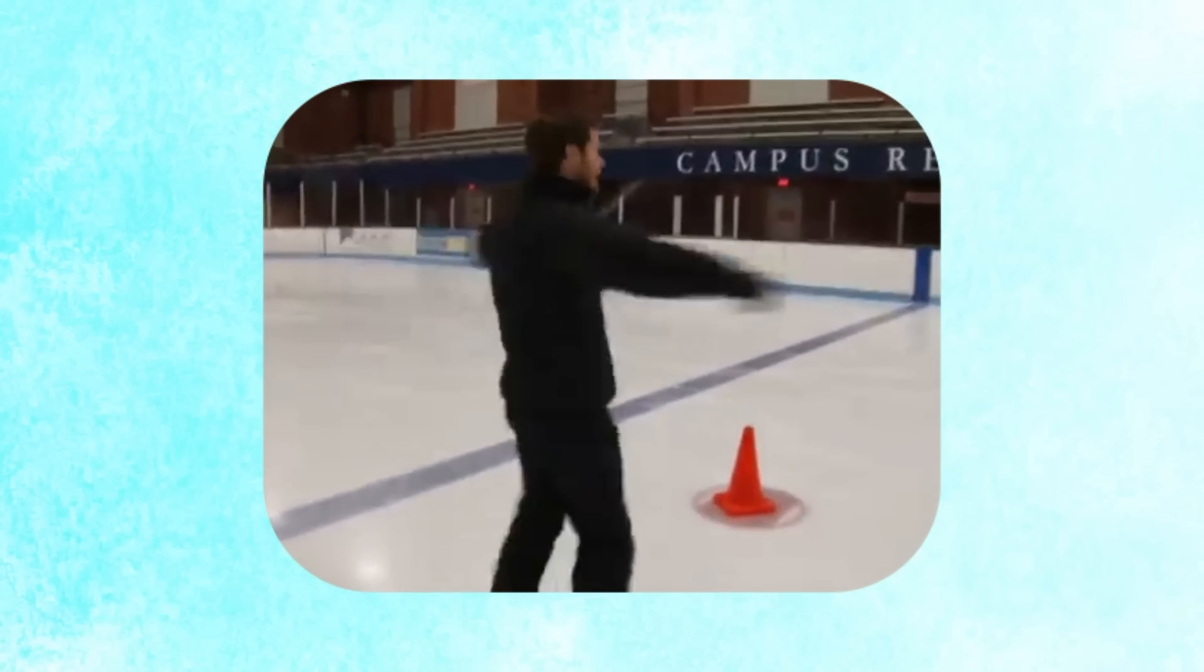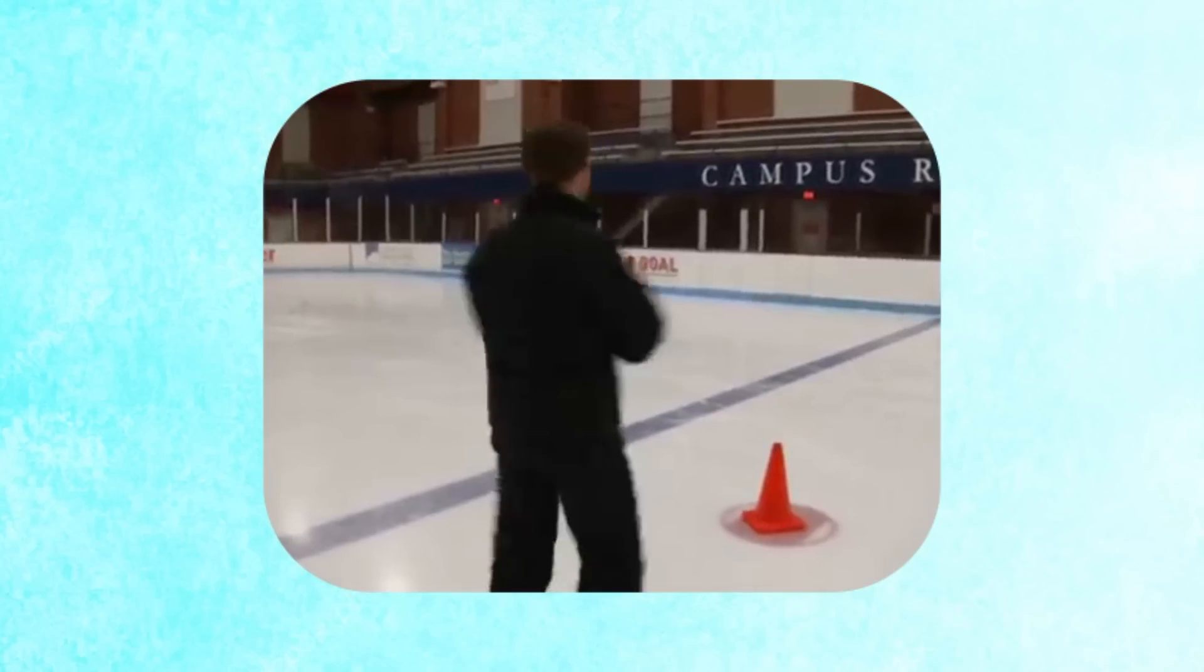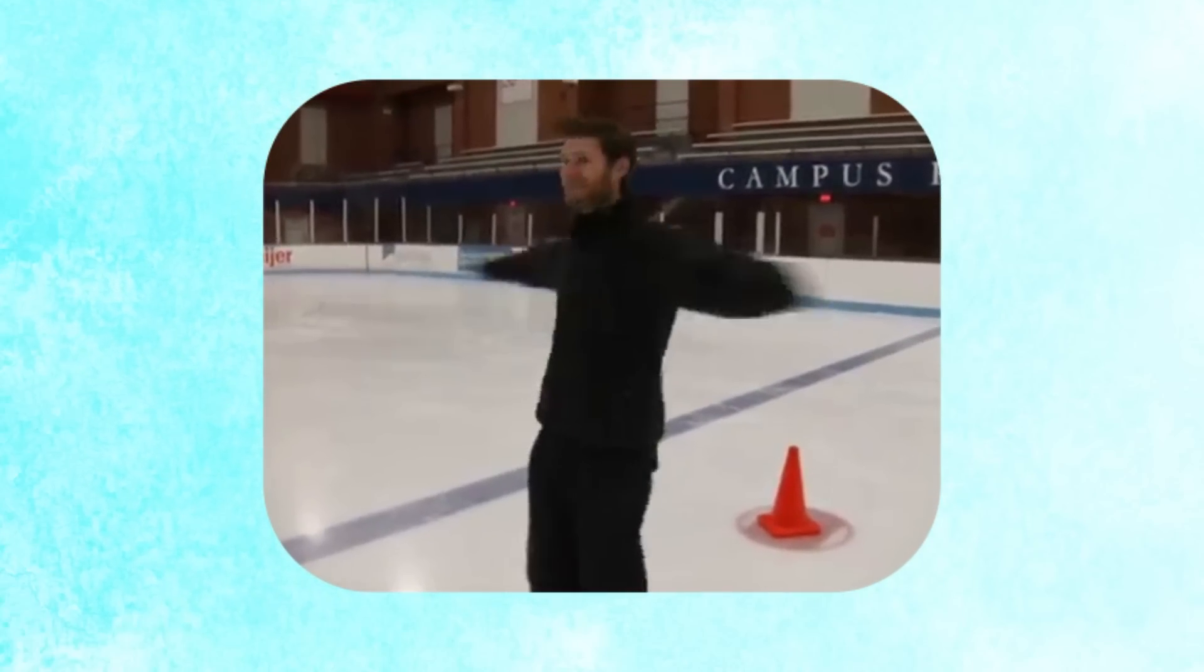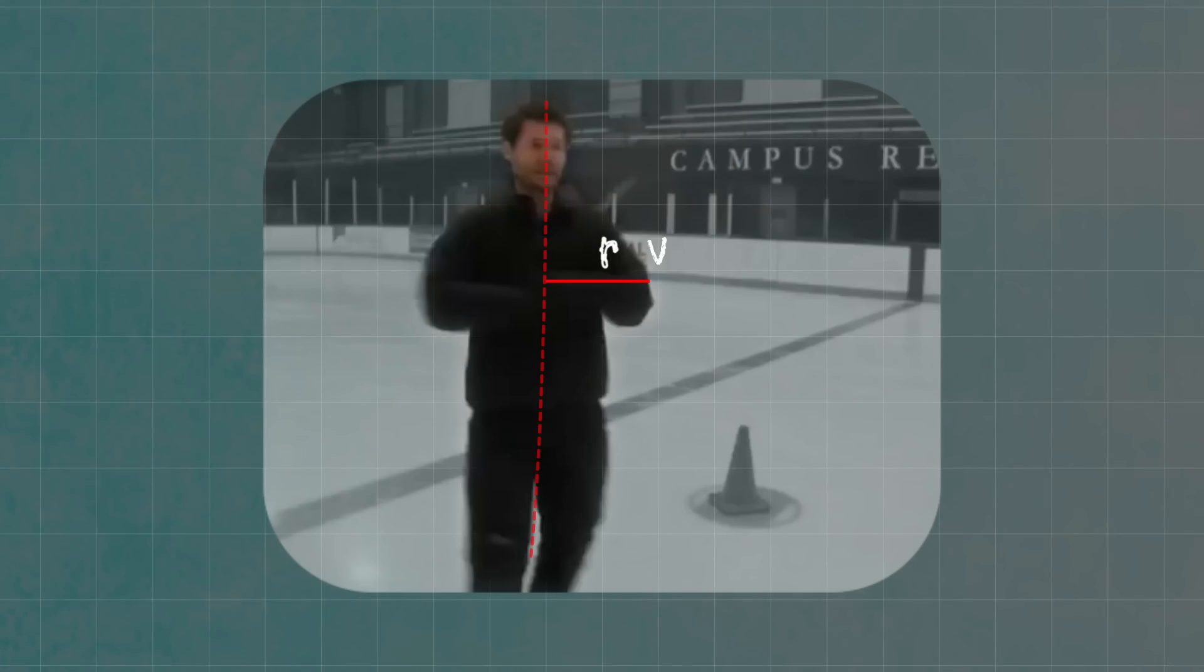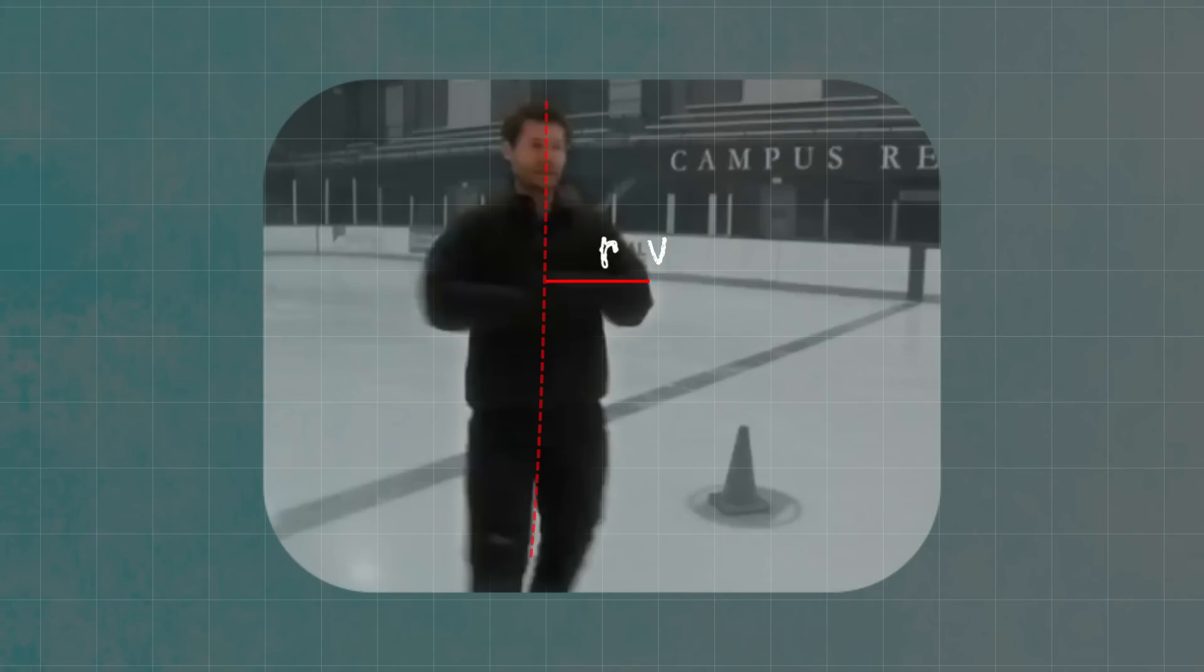Look at how this ice skater is spinning faster as he brings his arms in and slower as he spreads them back out. What exactly could be happening here? If this is the axis around which he is rotating, then his average distance, or his average spread around this axis, is some length r. And when he brings his arms in, basically that r is decreasing, but simultaneously his velocity of spin is going up. As the r is going down, the v is going up.